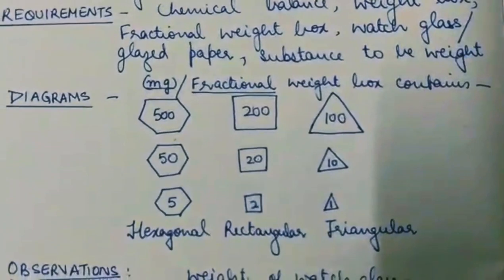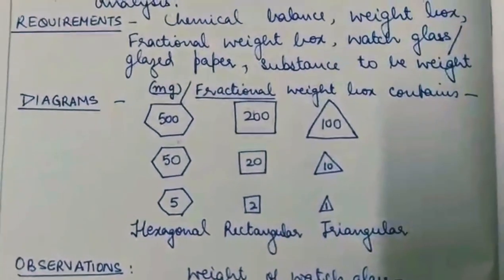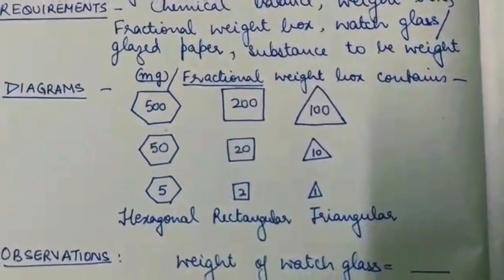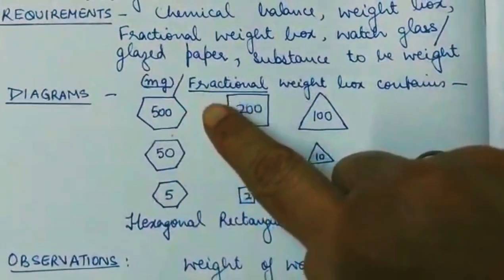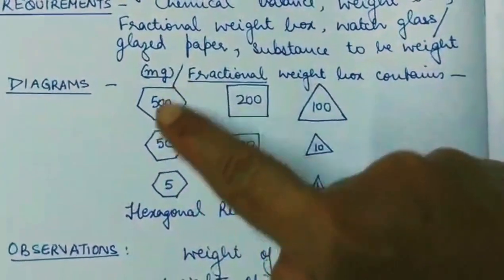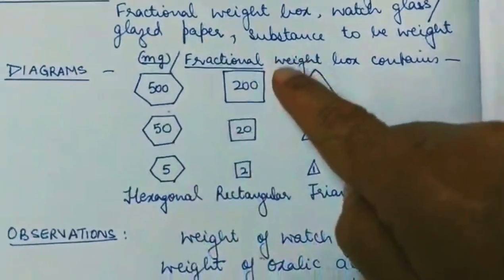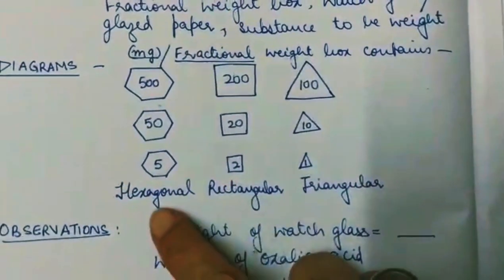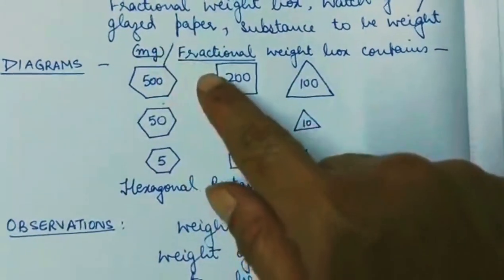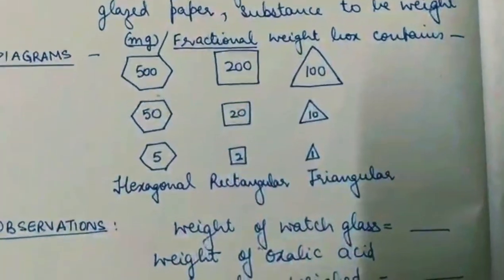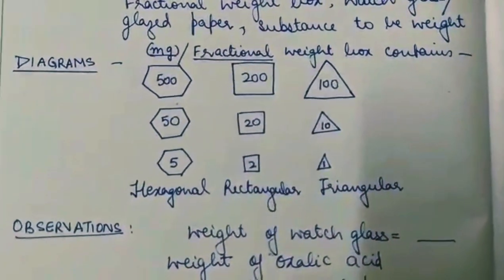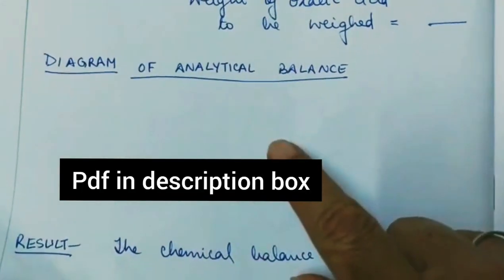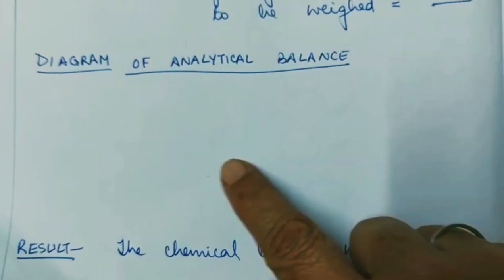This is followed by a diagram of the fractional weight box, because the shapes of the weights are important. It includes hexagons — large, small, and smallest — then rectangles and triangles, giving various weights in milligrams. Here you can also make the diagram of the analytical balance. A PDF will be posted along with this video.